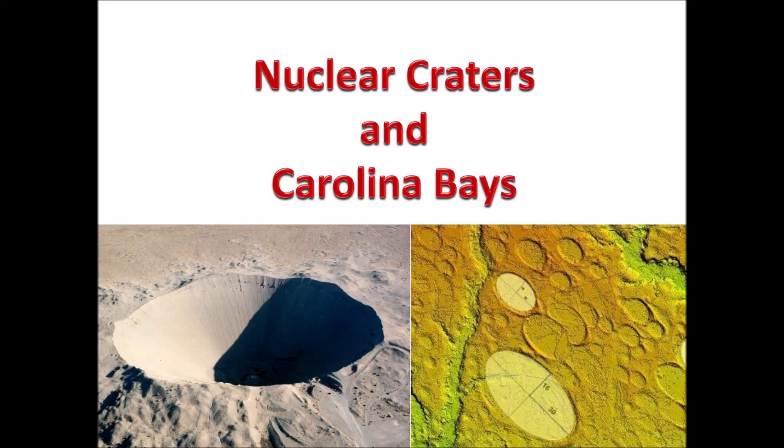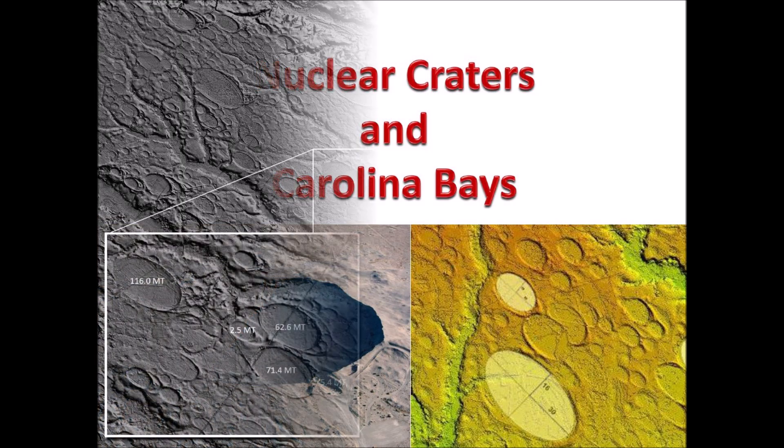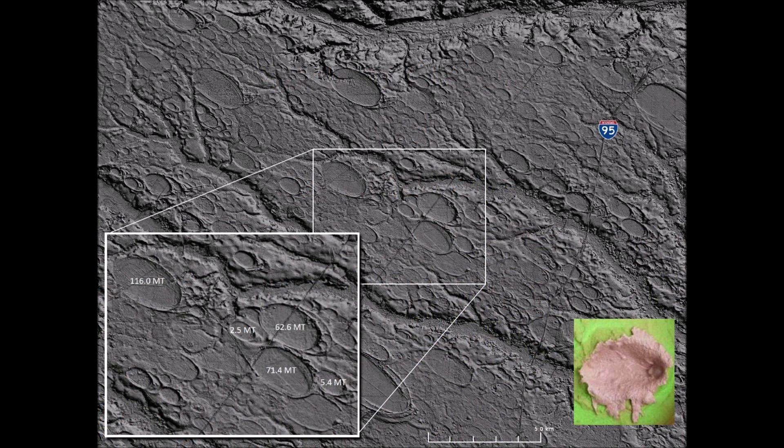This video discusses nuclear craters in the Nevada test site and the derivation of yield equations relating energy to crater size, used today to estimate the sizes of meteorites that impact the planets and moons of our solar system. The Glacier Ice Impact Hypothesis proposes that the Carolina Bays were created by secondary impacts of glacier ice ejected by an extraterrestrial impact on the Laurentide Ice Sheet during the Ice Age. The energy of these glacier ice impacts can be calculated using yield equations that correlate impact energy to crater size.